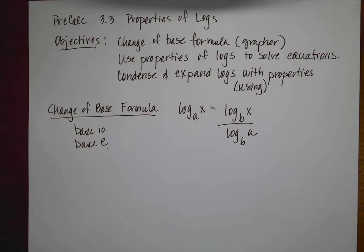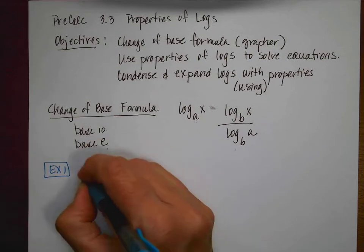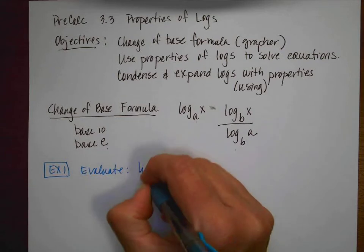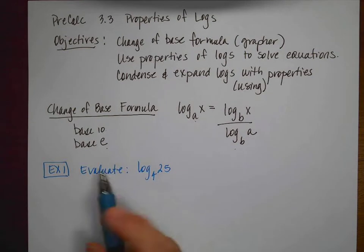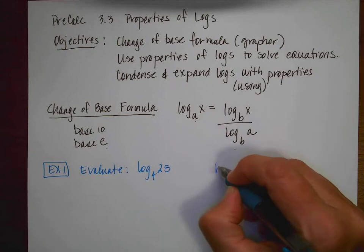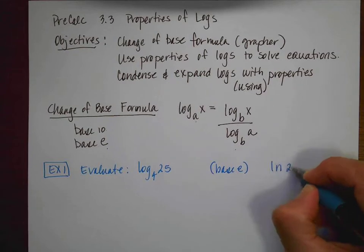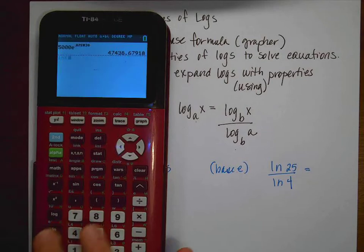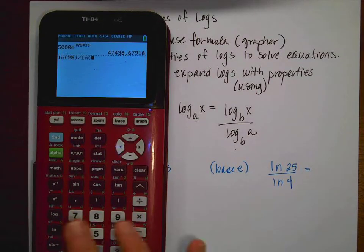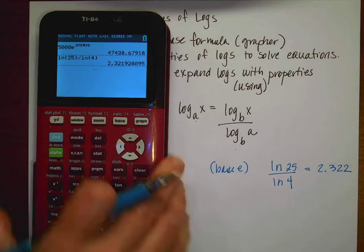I'm going to show you how to do this by hand, and then in your grapher. For our first example, if I wanted to evaluate log base 4 of 25, I used to not be able to do that in my calculator, so I had to use the change of base formula. I like base E because I have less letters to write, so this becomes the natural log of 25 divided by the natural log of 4. If you do that in your calculator, you get 2.322.